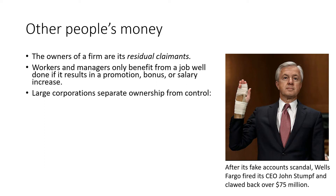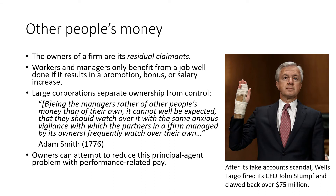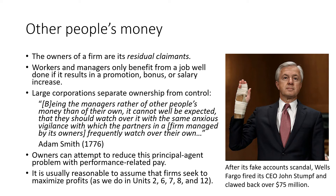Large corporations separate ownership from control. Adam Smith illustrated a fundamental problem here: whenever you're dealing with other people's money, you will never interact with that money with the same vigilance as your own. One way to deal with this is that owners can attempt to reduce the principal-agent problem with performance-related pay — if a job is done well, salary increases or increased benefits can be allocated. It is generally reasonable to assume that firms will seek to maximize profits, and this is a fundamental assumption we'll make as we move forward.